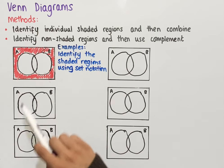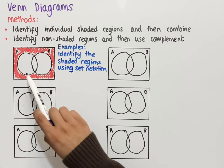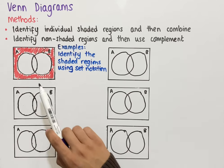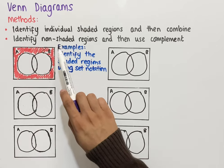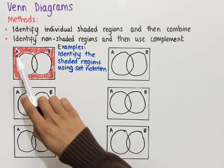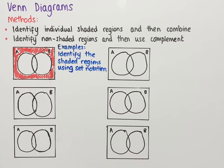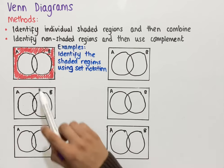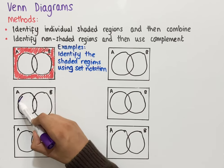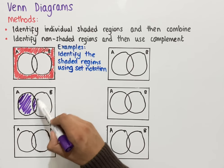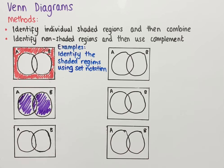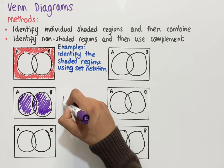In the third example, everything outside the two circles is shaded, and we need to identify that using set notation. We could identify the individual region directly or use the non-shaded regions and then apply complement. The non-shaded region is both circles in the middle, and shading those in gives us a common Venn diagram whose set notation is A union B.